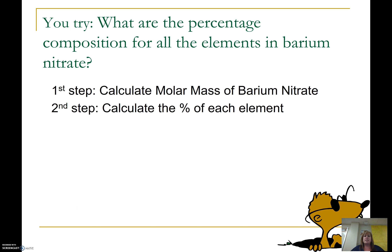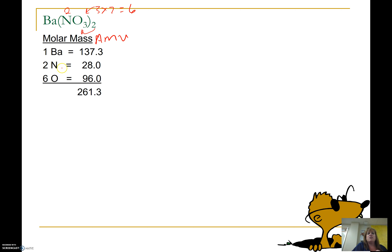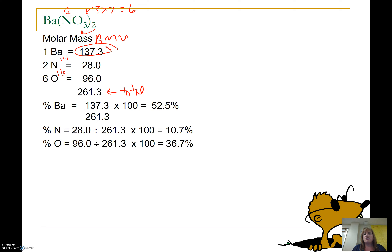Try this for barium nitrate. Pause the video and calculate the percent of each element in barium nitrate. So we need to calculate molar mass: there is one barium, with an AMU of 137. There are two nitrogens — because we distribute the subscript 2 — and three times two, or six oxygens. Each nitrogen is 14, so 14 times 2 is 28. Oxygen is 16, so six oxygens give 96. Add them together for the total molar mass of barium nitrate. To find the percent of barium, take 137.3 divided by the total; same for nitrogen and oxygen. If you add them up, you will get close to 100%.